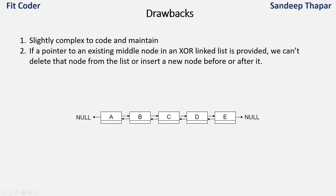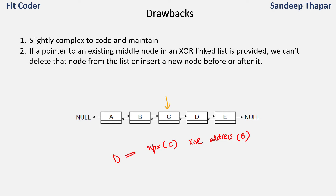The second problem is that if we are given a pointer to an existing middle node in the XOR linked list, we can't delete that node or insert a new node before or after it. For example, if we are only given a pointer to node C, to go forward to D we need address of B as well, since we compute npx(C) XOR address of B. Without knowing at least one neighboring address, traversal is impossible. So we cannot perform those operations on an isolated middle node.